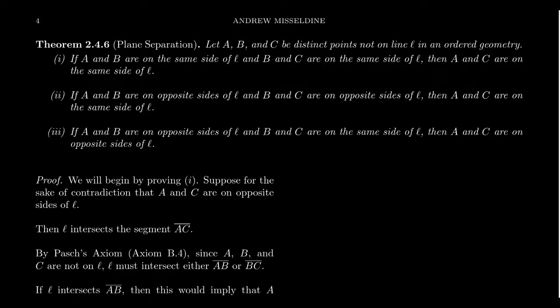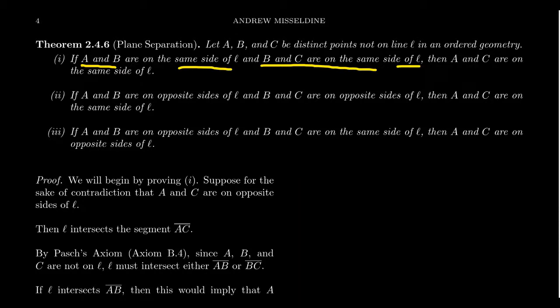Plane separation is going to provide us something logically equivalent to Pasch's axiom. In our lecture series, we took Pasch's theorem as the axiom, and plane separation is a consequence. There are actually three statements to plane separation, and all three are basically the same. Consider three points A, B, and C, and a line L such that A, B, and C are not points on L, in an ordered geometry. Statement one: if A and B are on the same side of L, and B and C are on the same side of L, then A and C are on the same side of L. This shows that being on the same side of a fixed line L is a transitive relation.